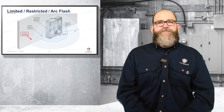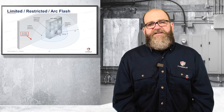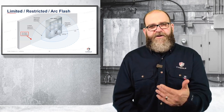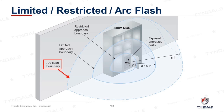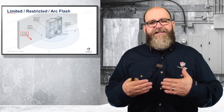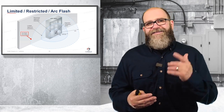Now here's one thing I want you to remember — write this down. It is extremely important to get these physical barricades correct. The restricted approach boundary, the limited approach boundary, and the arc flash boundary are imaginary lines. You need to set up something physical to keep people out of that area. So if you're at that MCC in this picture, a 600-volt MCC, if the limited approach boundary is 42 inches and the arc flash boundary is at nine inches for this piece of equipment, where are you going to set up your physical barricade? 42 inches. You are never, ever going to set your physical barricade less or closer to energized parts than the limited approach boundary.